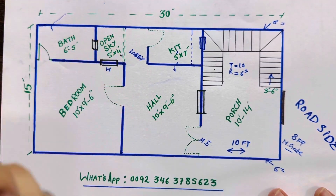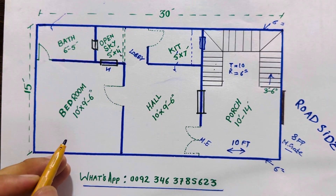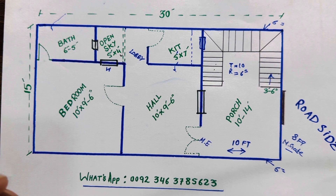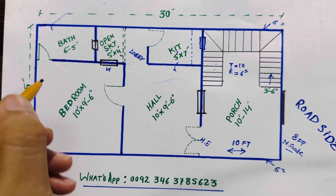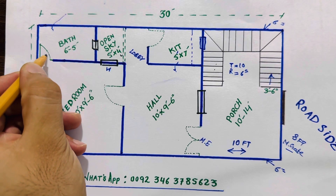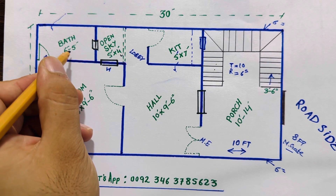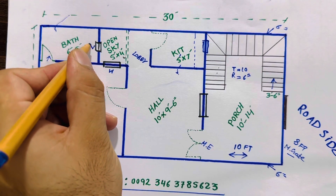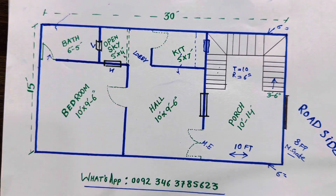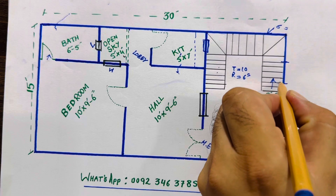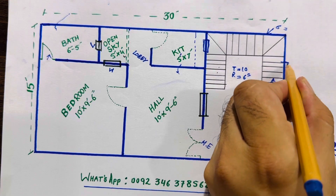You can also use this open place for a powder room or washing area. With this bedroom, this is its attached bath; size of this bath is 6 feet by 5 feet, and this is its ventilation. To the front side, you can also keep a window or ventilation for this staircase.